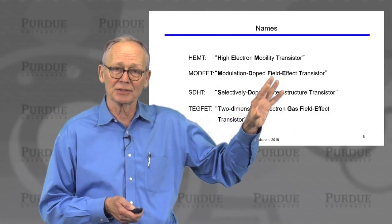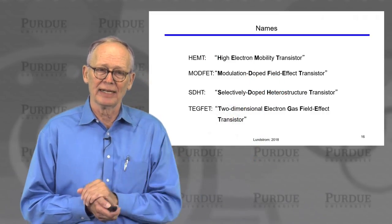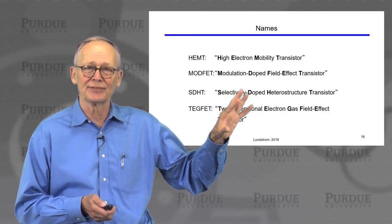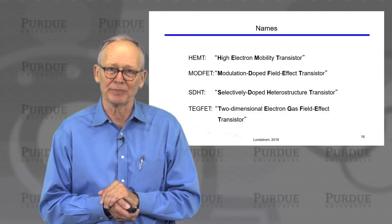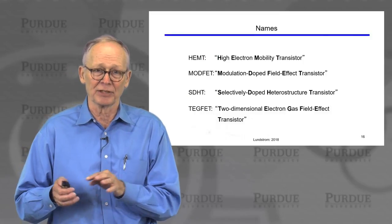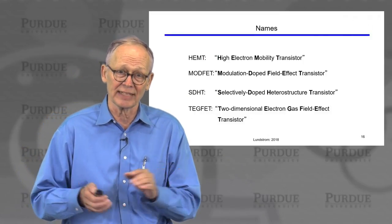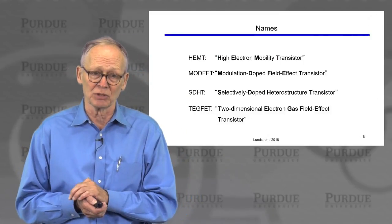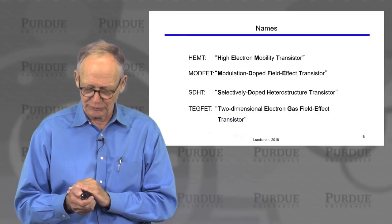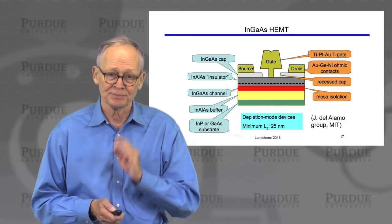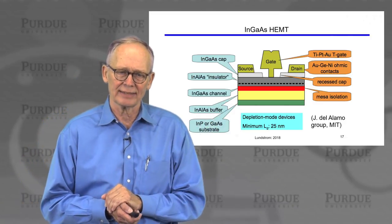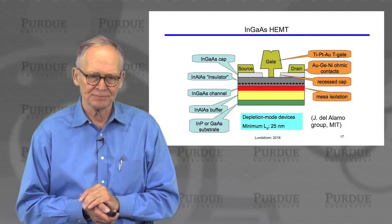This transistor was first called the HEMT — high electron mobility transistor. Several other names were given to it by groups developing their own versions elsewhere in the world, but the most widely used name remains HEMT.